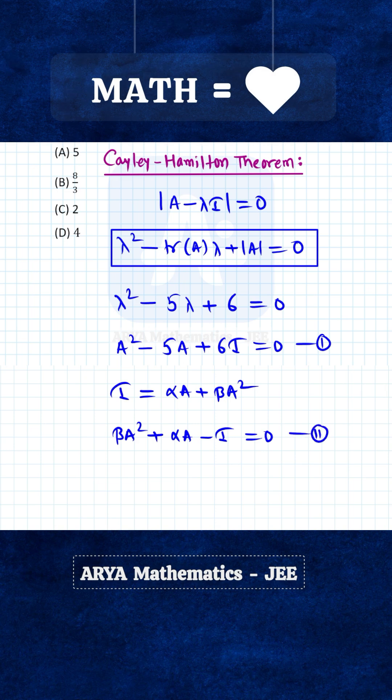Let's call this equation 2. Now we will compare equation 1 and equation 2 to find the value of α and β. Comparing them: β/1 = α/(-5) = (-1)/6.